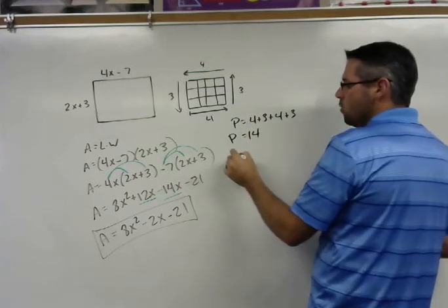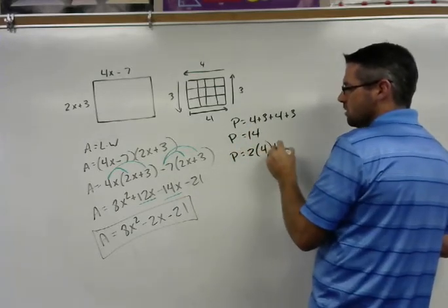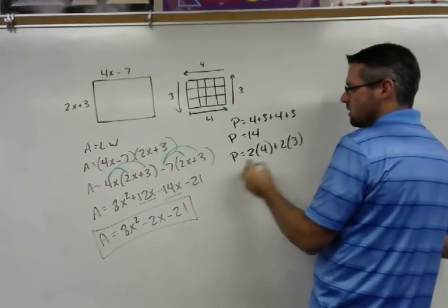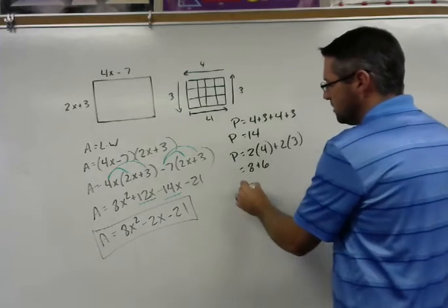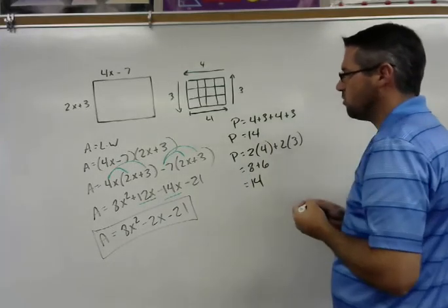Or we could say that we have two 4s and two 3s. And then when simplifying that, we end up with 8 plus 6, which is still 14. So two different ways to approach perimeter.